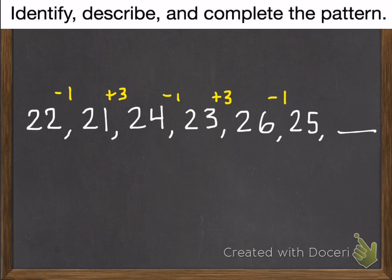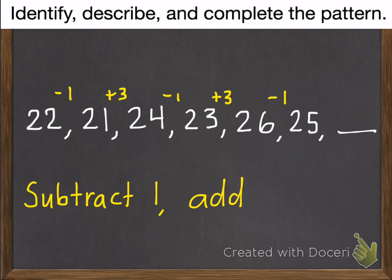Okay. We get subtract 1, add 3, subtract 1, add 3, subtract 1. So that is our pattern. We subtract 1, then add 3. Since we just subtracted 1, we are on to add 3. 25 plus 3 is 28.